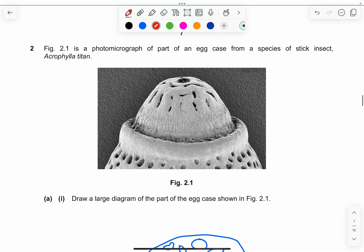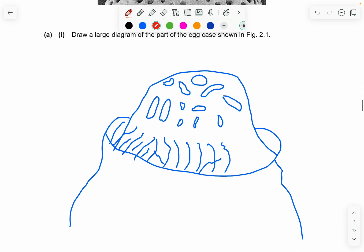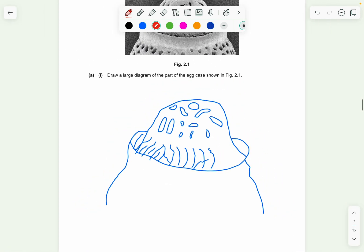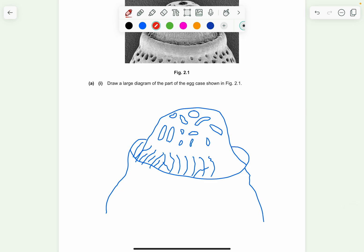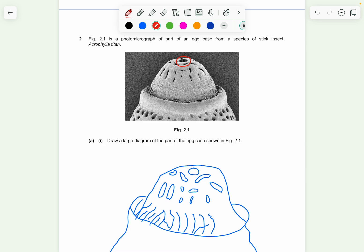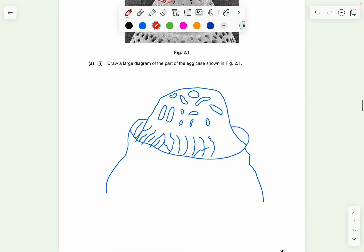Now let's go to question number two. Figure 2.1 is a photomicrograph of part of an egg case from a species of steak nest aquifilar titan. So part one, draw a large diagram of the part of the egg case shown in figure 2.1. So you can just draw this. So what do the mark scheme actually want? It's just to make sure that your single clear unbroken line, the size is greater than half the space provided, and detail one is by the dark circle in the top. So you must draw this one. This is very important. And then you see, and two parallel lines on the left side of the capitulum, which is this one. The two lines have to be drawn and the fibers around the operculum. So these are the fibers. You have to draw all of these also. So you can just draw a few samples of it to show that you know that the fibers are there.